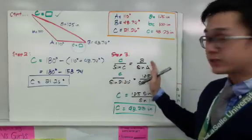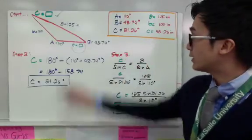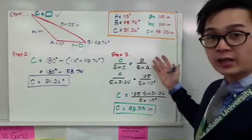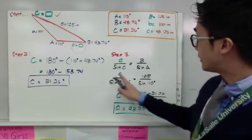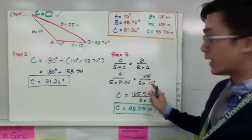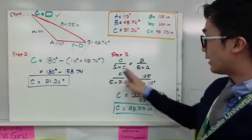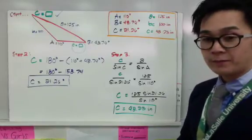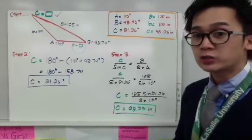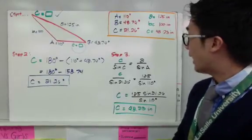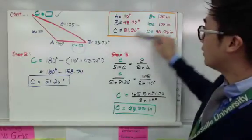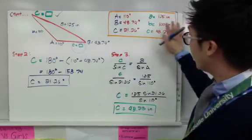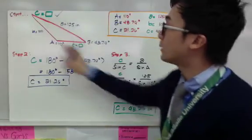Now we just need to find side c. Using step three, we still use the law of sines. Since c is missing, I have c over sine C equal to a over sine A — using the complete pair. So I set up c over sine 21.26 equal to 125 over sine 110. Using cross multiplication and isolating c, we get c equals 125 times sine 21.26 all over sine 110. Using the scientific or graphing calculator, c equals 48.23 inches. We have now completed the triangle — all angles and all sides — without using the Pythagorean theorem. That's how we use the law of sines to complete a given oblique triangle.